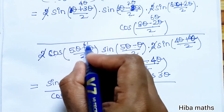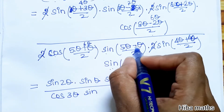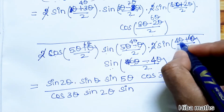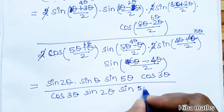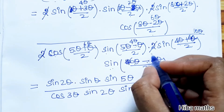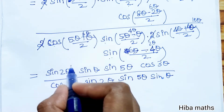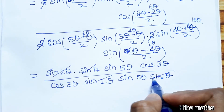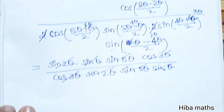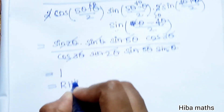After substituting all values, the numerator has sin 2 theta, sin theta, sin 5 theta, and cos 3 theta terms. The denominator also has sin 2 theta, sin theta, sin theta, sin theta, cos 3 theta, and cos 3 theta terms. Cancelling numerator and denominator, all terms cancel out and the answer is 1. Hence LHS equals RHS, and the proof is complete.